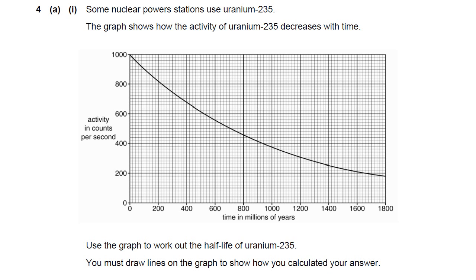Question 4 on this OCR Gateway P4 paper. This is for Gateway Additional Science or Gateway Physics. Some nuclear power stations use Uranium-235. The graph shows how the activity of Uranium-235 decreases with time.